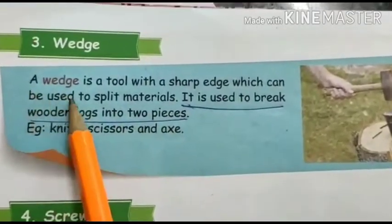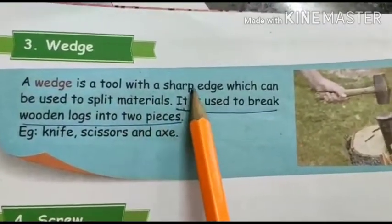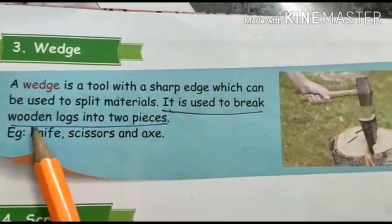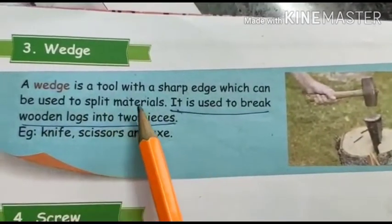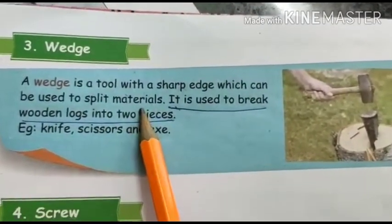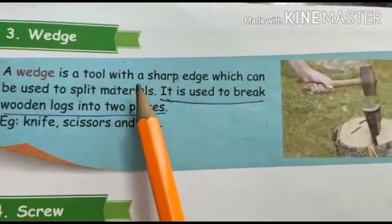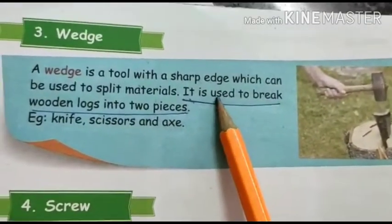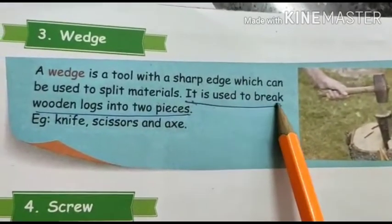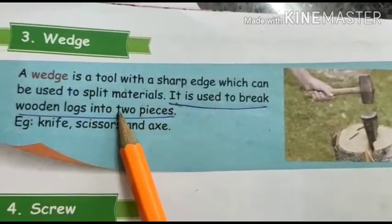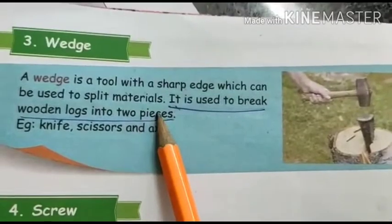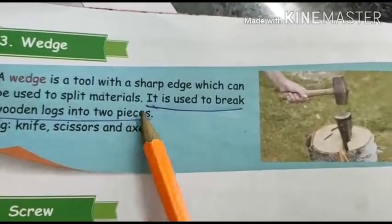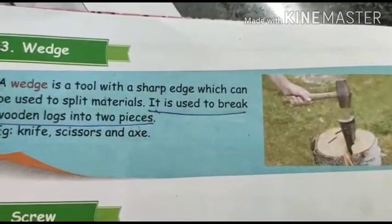A wedge is a tool with a sharp edge which can be used to split materials. It is used to break wooden logs into two pieces.